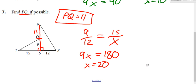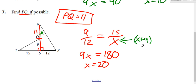We could have solved that differently. If we called PQ itself X, then the total length would be X plus 9. Setting up the proportion that way, solving gives X equals 11 directly without the extra subtraction step.